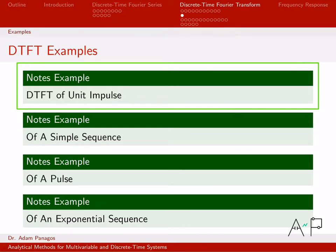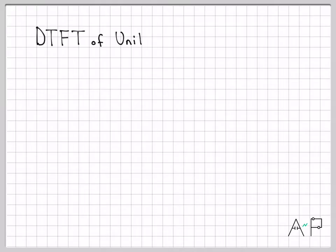In the subsequent videos, we'll build up the complexity of the signals we're analyzing, and the examples will get a little bit more challenging in terms of the mathematics we have to do. But for now, let's start off with the DTFT of a unit impulse.